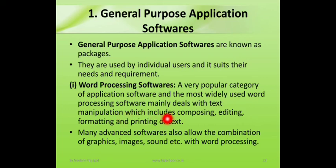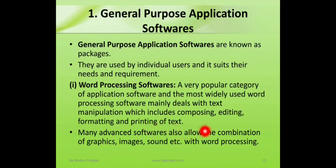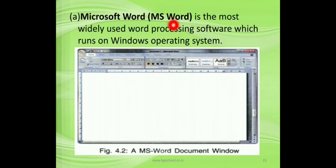Word processing software mainly deals with text manipulation. We can edit and change text, and we can format it — which includes composing, editing, formatting, and printing of the text. We can prepare a nice document, format and edit the text, and then print it. Many advanced softwares also allow the combination of graphics, images, and sound with word processing.